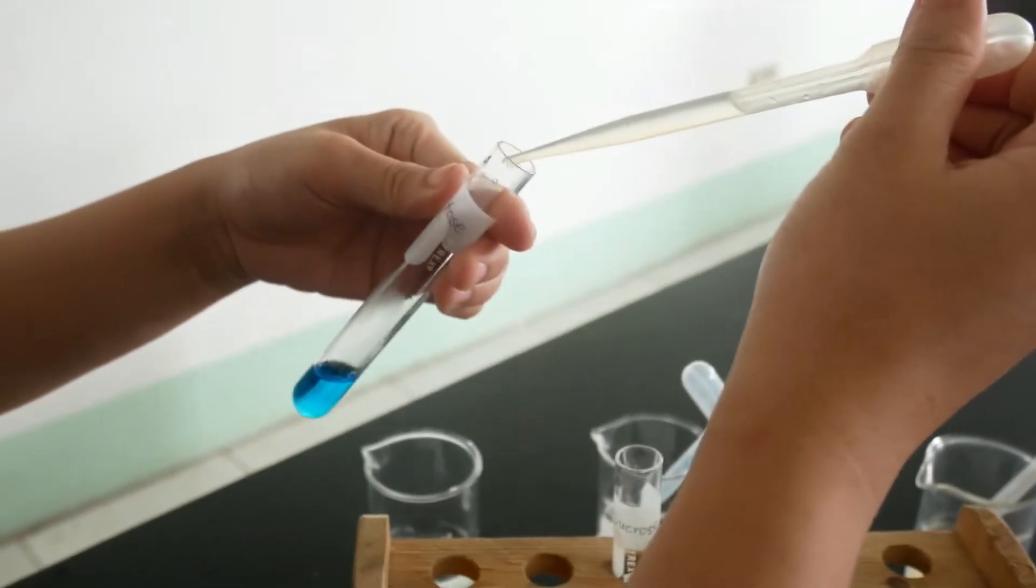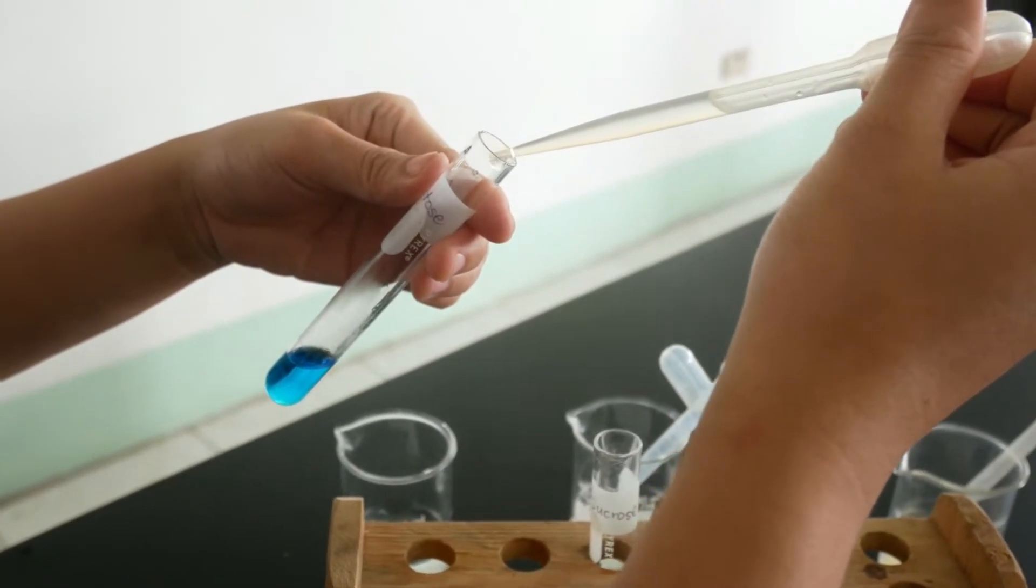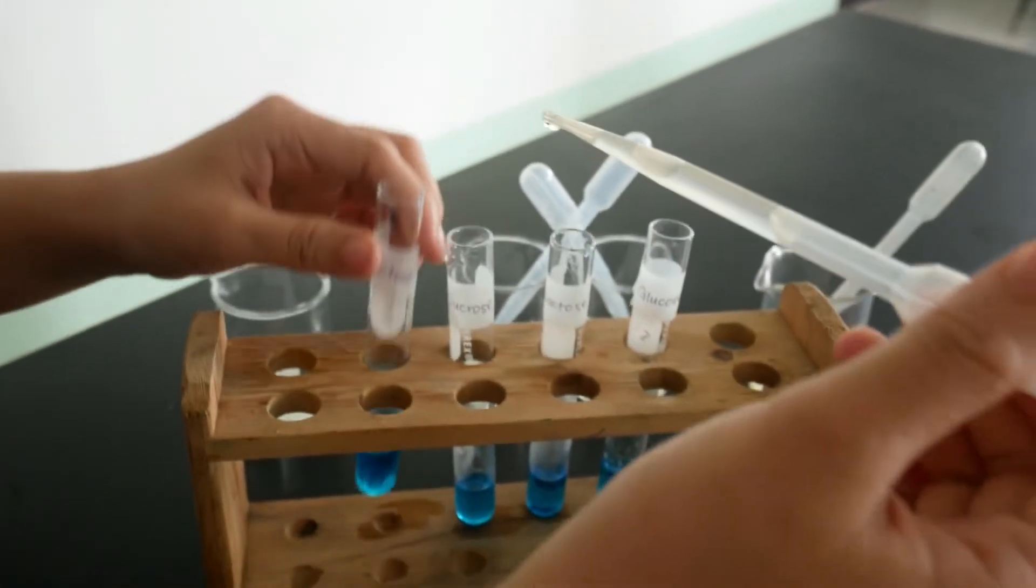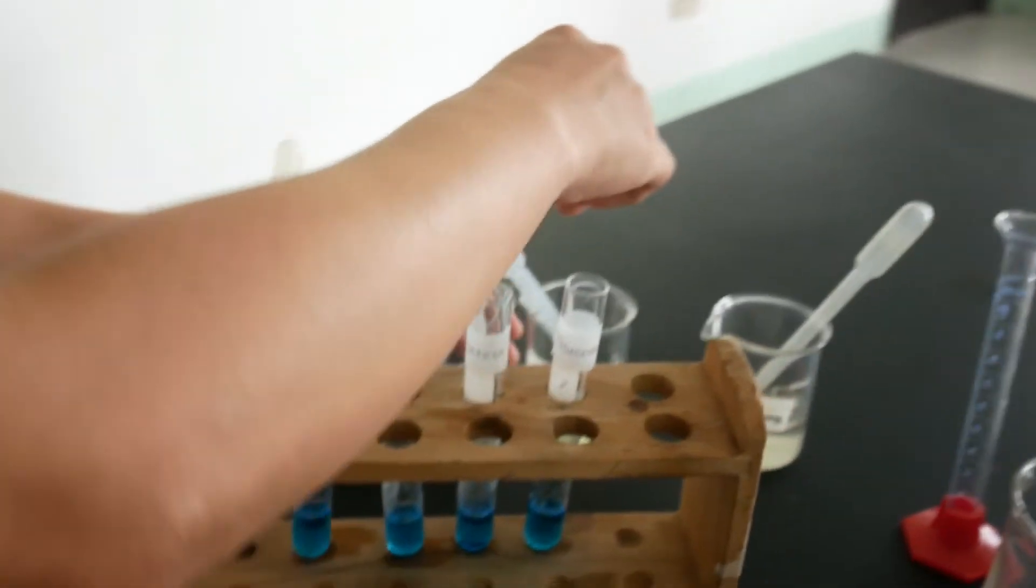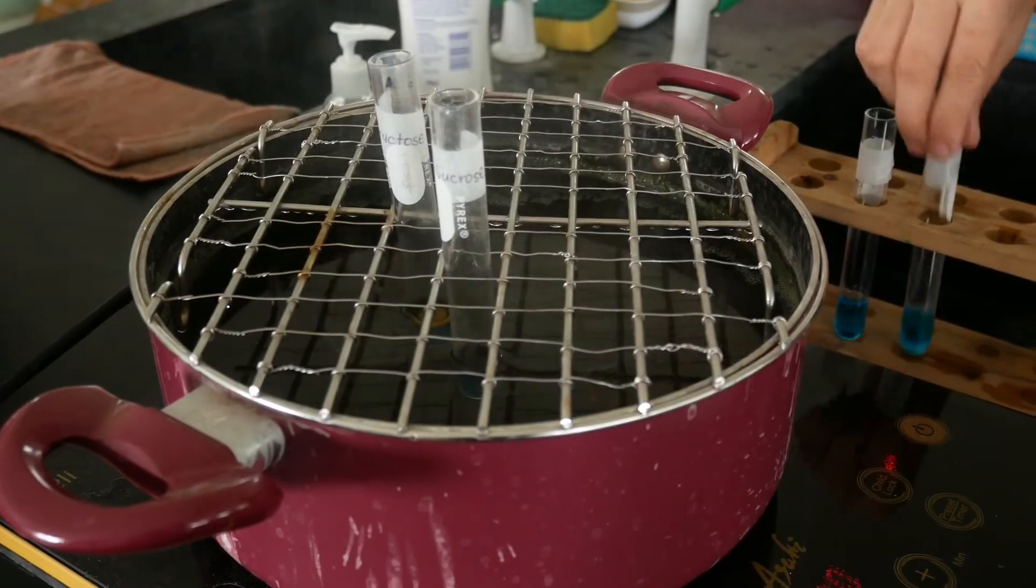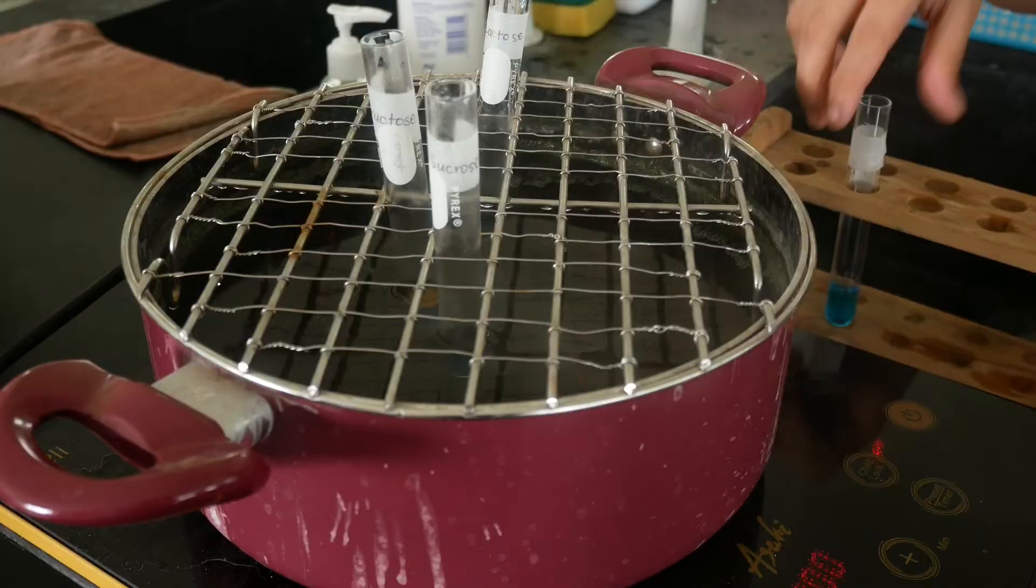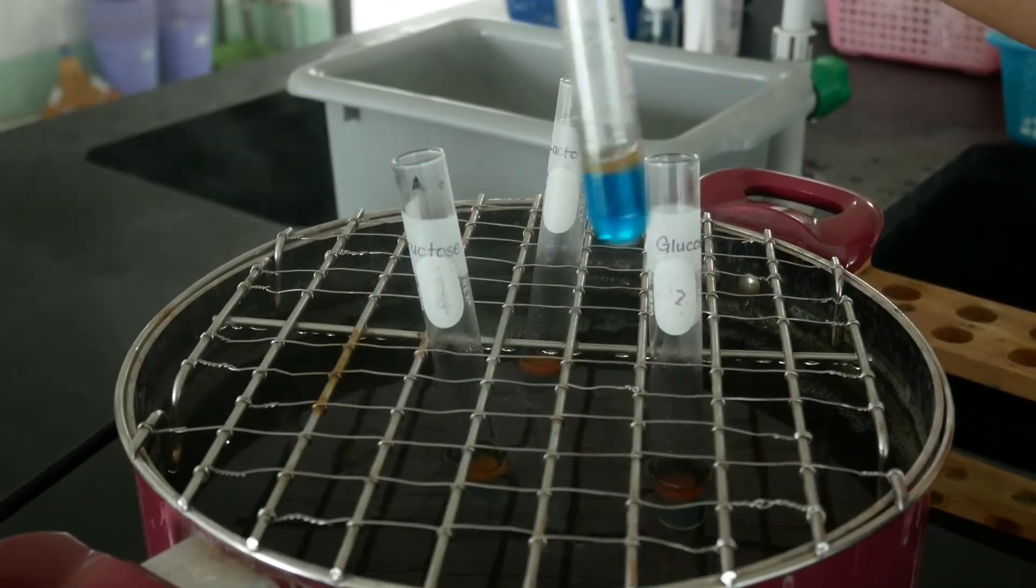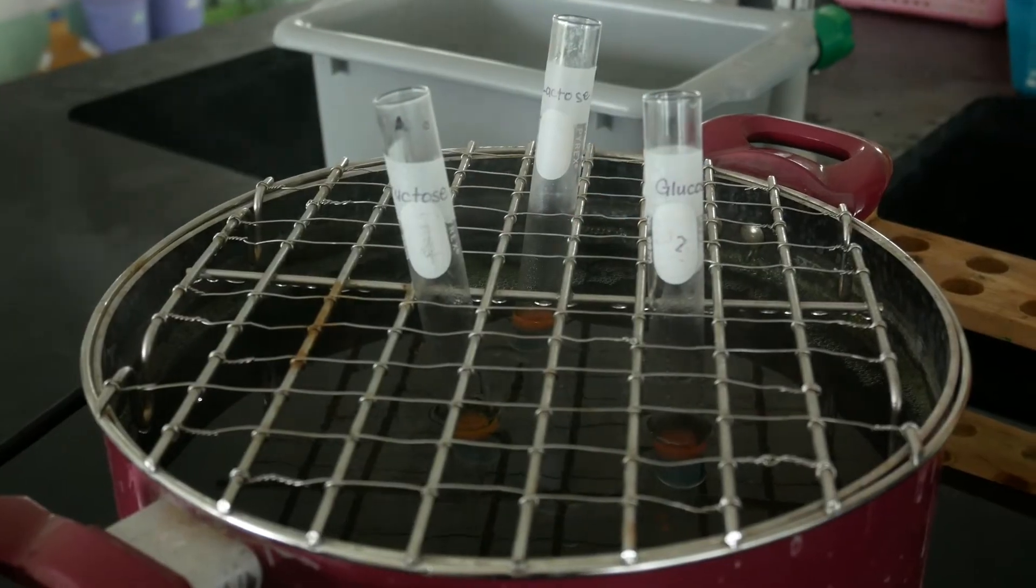And then add 5 drops of carbohydrate solution. After that, place the 4 test tubes containing Benedict's solution and carbohydrate samples into a boiling water bath for 2 minutes. Cool and observe what happens.